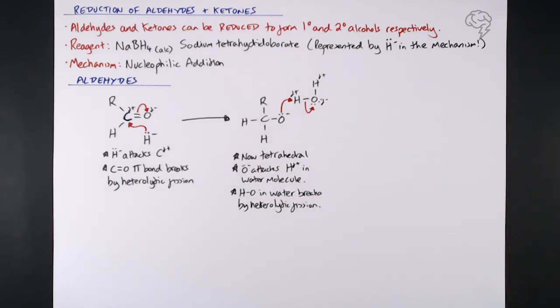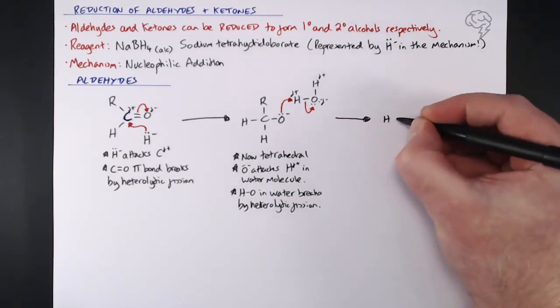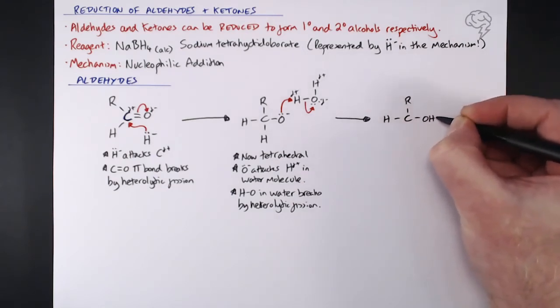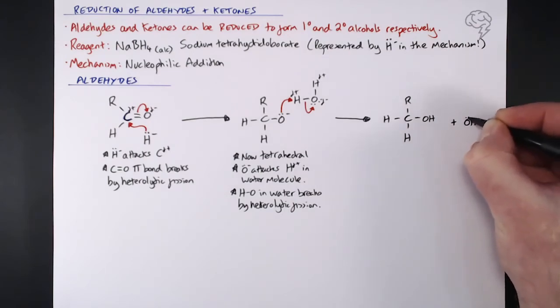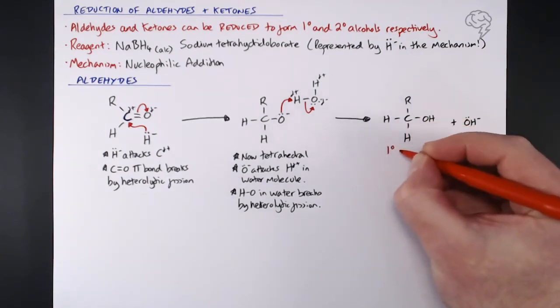This is what we get - our primary alcohol. It's a primary alcohol because there are two hydrogens bonded to that carbon where the OH is, on carbon number one essentially. As a byproduct we get the OH minus, because the water split heterolytically, so we form a hydroxide ion in solution.